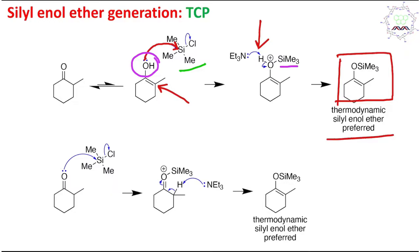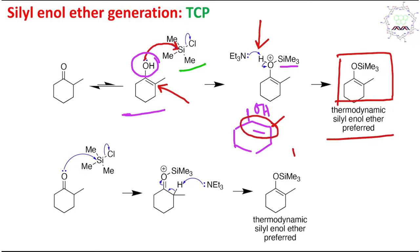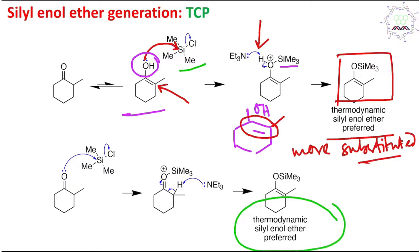The thermodynamically favored product is produced here because of keto–enol tautomerism. Why was this particular enol produced? This enol structure is more stable because the double bond — the alkene — is more substituted. By Zaitsev's rule, more substituted alkenes are more stabilized, so this enol is thermodynamically more stable. This first example is an enol-mediated mechanism.